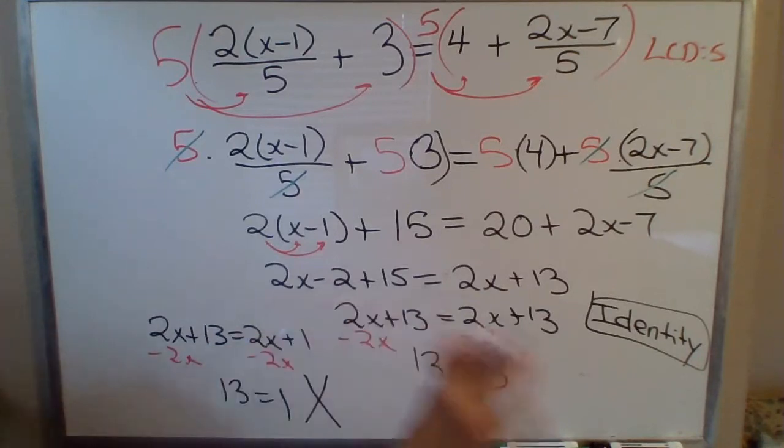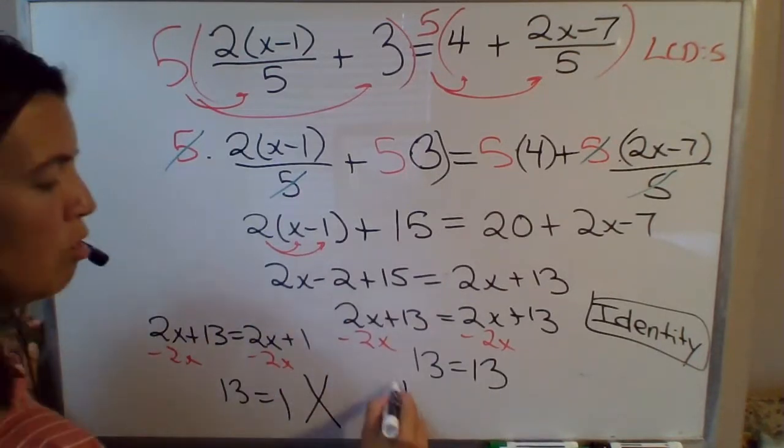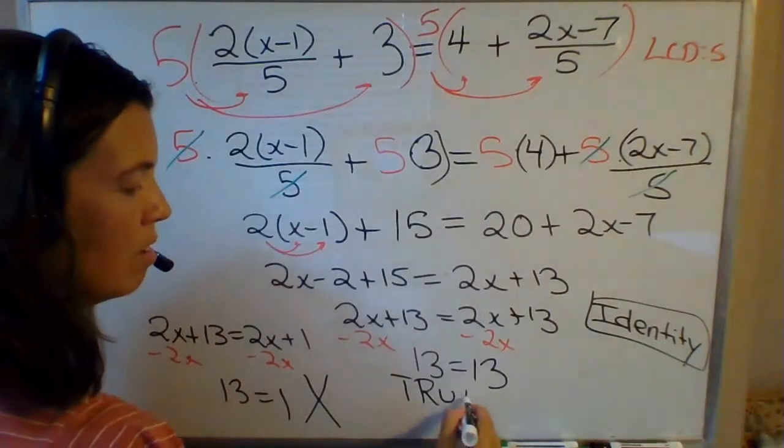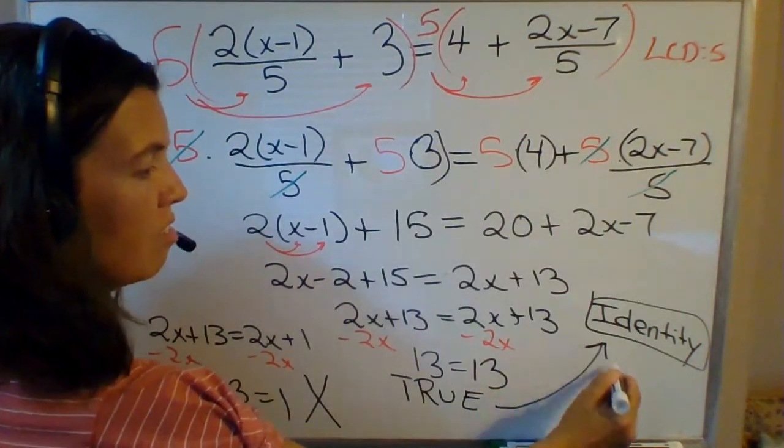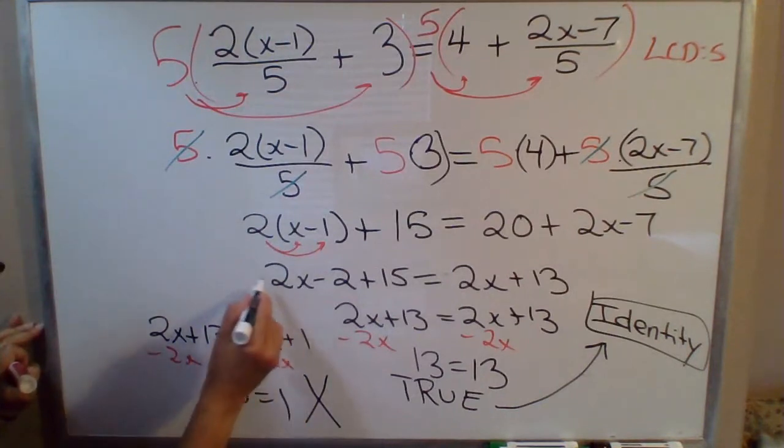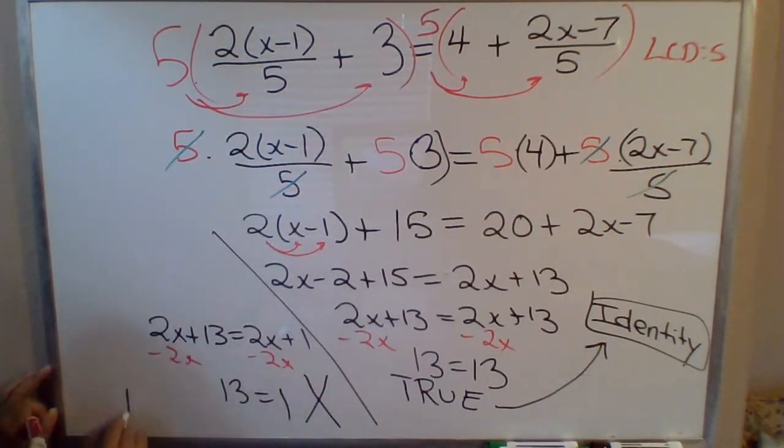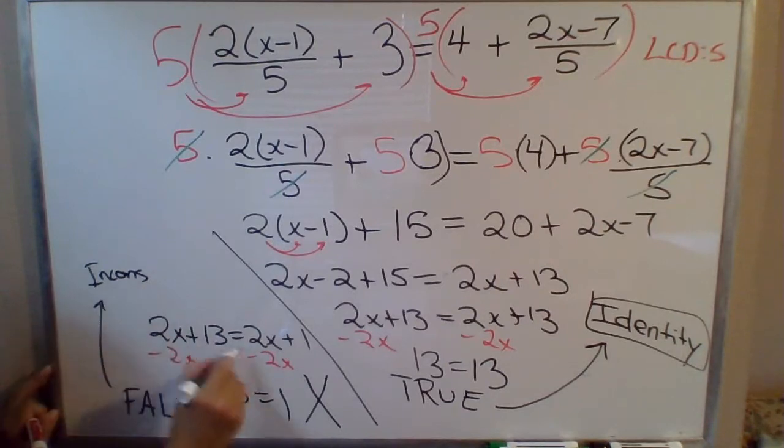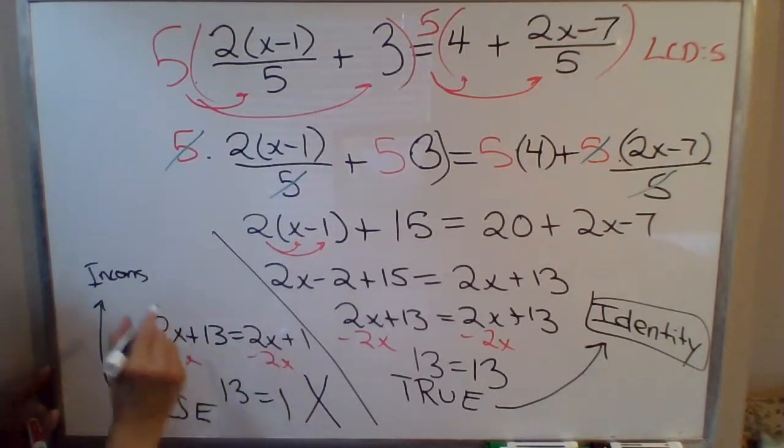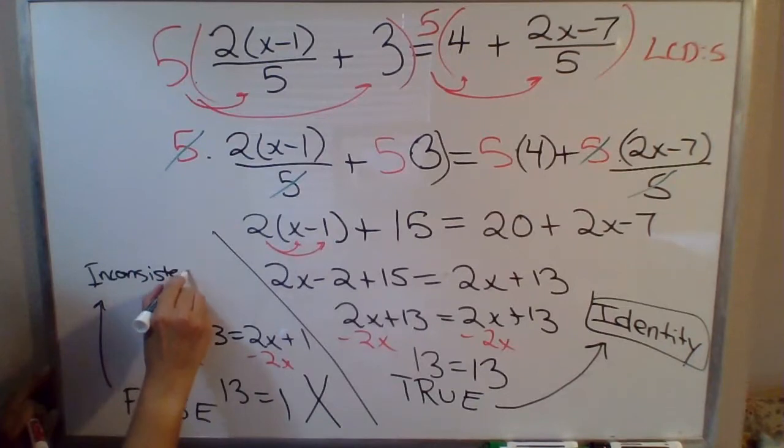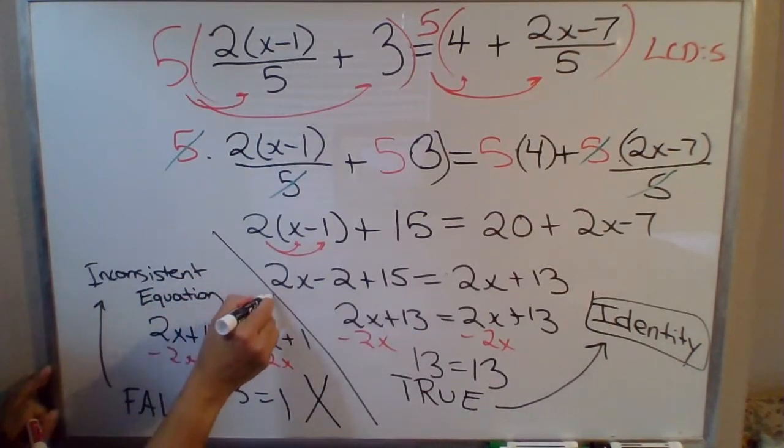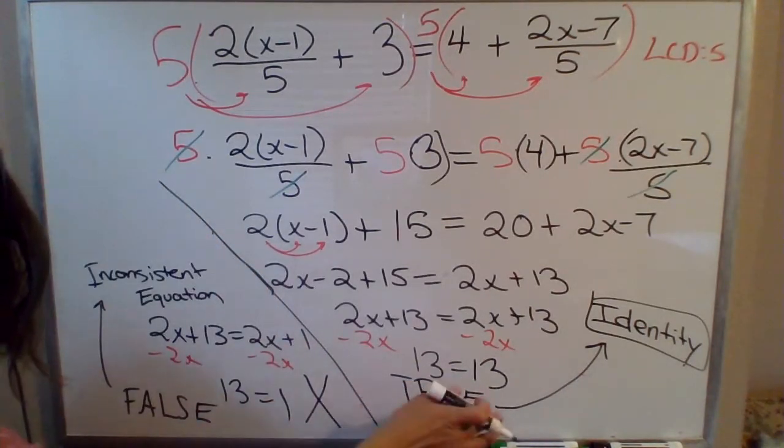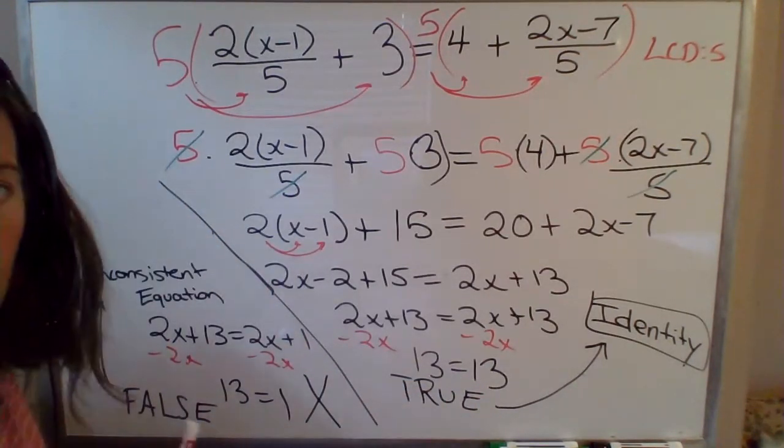So when the x's are completely removed from the equation, either you end up with a true statement like I did over here - in which case this is an identity - or a false statement like what happened here, which would mean this is an inconsistent equation. So this equation, which is a different equation by the way, is an inconsistent equation. I just wanted to write this slightly different equation over here to contrast with what happened in that original example.